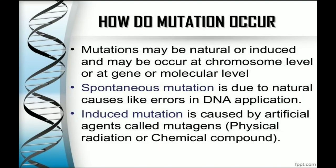How do mutations occur? Mutations may be natural or induced, and may occur at the chromosome level, gene level, or molecular level. Spontaneous mutation is due to natural causes, like errors in DNA replication. Induced mutation occurs by artificial agents called mutagens, physical radiation, or chemical compounds.